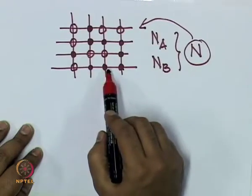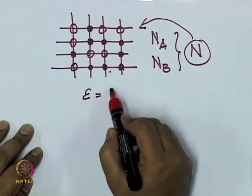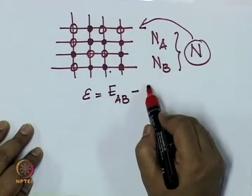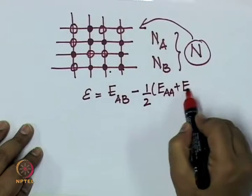We defined a parameter called epsilon, which is the difference between an AB bond minus the average of AA and BB bonds.